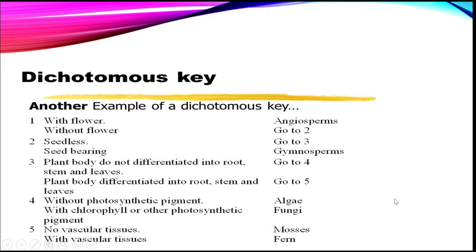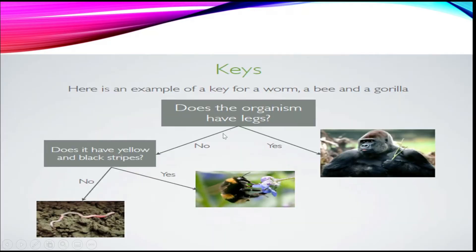Here is another example of a key — a worm, a pea, and a gorilla. The question asks: does the organism have legs? We have two answers: yes or no. If yes, only the gorilla has legs among those three examples. If no, we go to another level: does it have yellow and black stripes? If yes, it is the bee. If no, it is the worm.